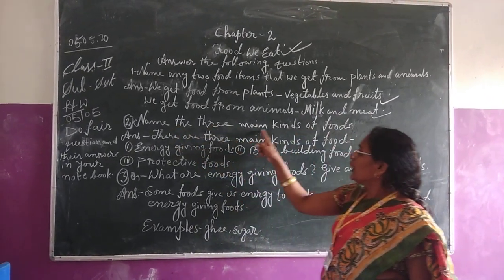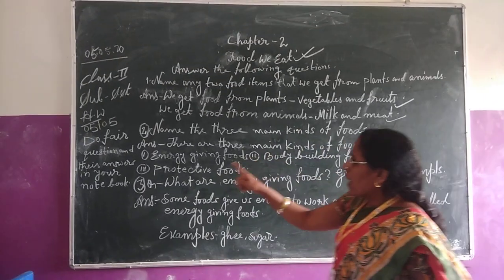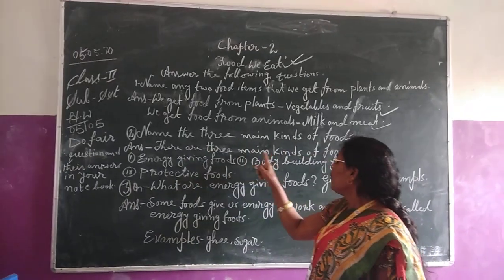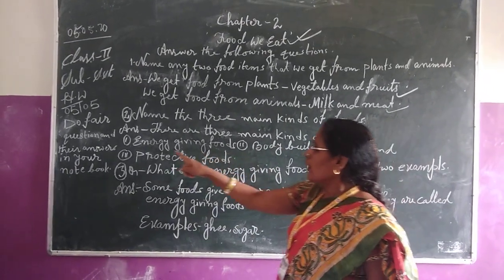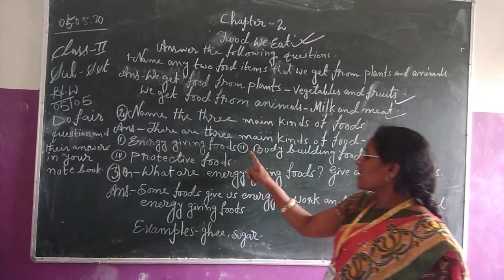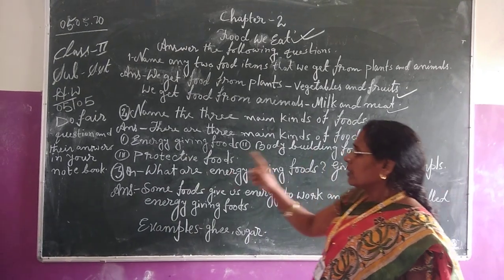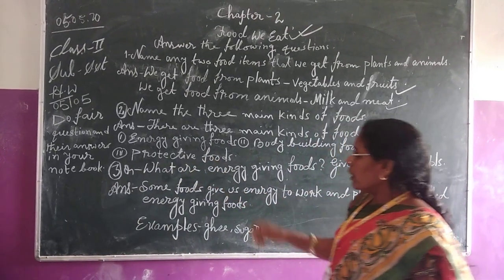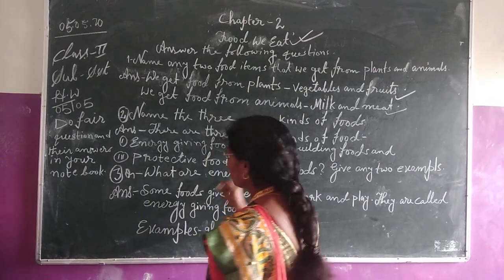Second question: name the three main kinds of food. Answer: there are three main kinds of food. Number one, energy-giving food. Number two, body-building food. And number three, protective food. That is the answer to the second question.